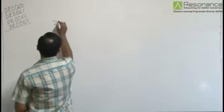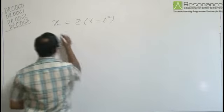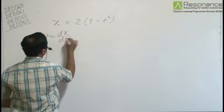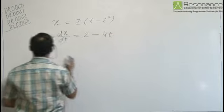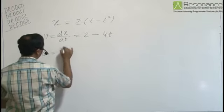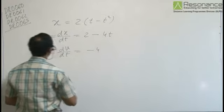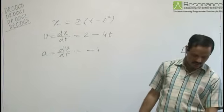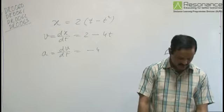x is given to be 2t - t². So velocity dx/dt is equal to 2 - 4t, and acceleration dv/dt is equal to -4. So the acceleration of the particle is -4 meters per second squared. Option C is correct.